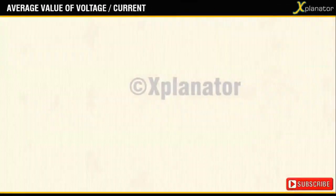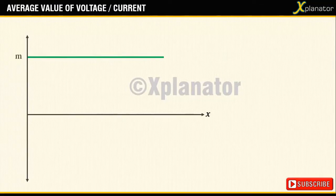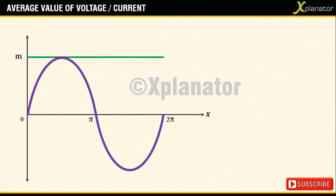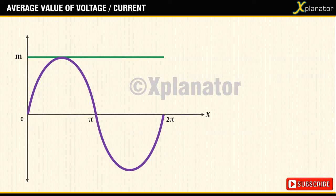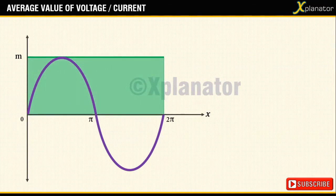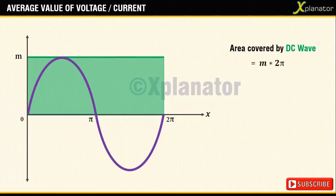Consider a XY plane and a DC signal with a magnitude M. Include an AC signal with a peak of same magnitude M. If you calculate the area occupied by the DC signal till the end of AC cycle, i.e. from 0 to 2 pi, the area will turn out to be M x 2 pi.